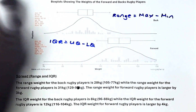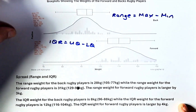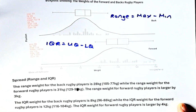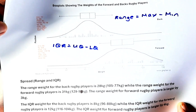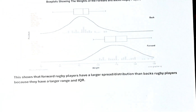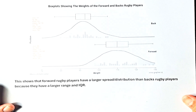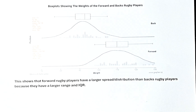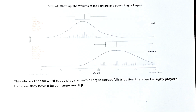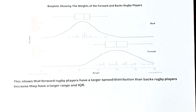We're going to conclude from those findings. Because the forwards have the bigger range and bigger IQR, we can conclude that the forward rugby players have a bigger spread or bigger distribution than the back rugby players. This is how you answer questions about spread or distribution.